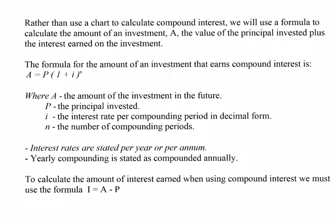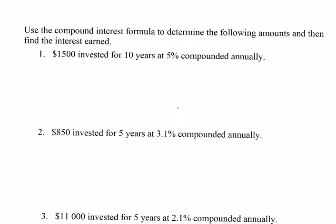All interest rates will be referred to as interest rates per annum for today. Next day we'll modify that. Yearly compounding is stated as compounding annually. To calculate the amount of interest, we take the total amount — our future value — and subtract our original amount. Using our equation: A is equal to P times (1 plus I) to the N.